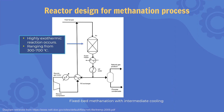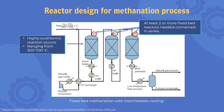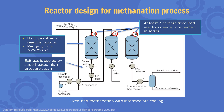Due to the strong exothermic nature of the methanation reaction, which ranges from 300 to 700 degrees Celsius, and limited radial and axial heat transfer in a fixed bed reactor, it is difficult to operate a single bed reactor under isothermal conditions. For good control of the reaction temperature, at least two or more adiabatic reactors must be connected in series. The exit gas from the first reactor is cooled by production of superheated high-pressure steam.